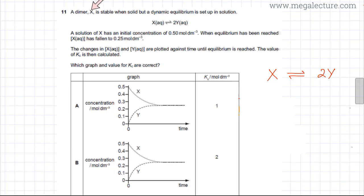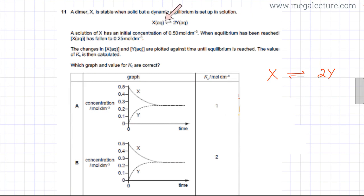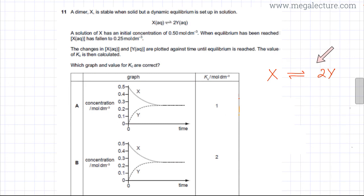Dimer X is stable when solid, but a dynamic equilibrium is set up in solution. There's a dynamic equilibrium established where X is in equilibrium with Y — X is getting converted to Y and vice versa.